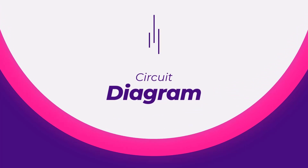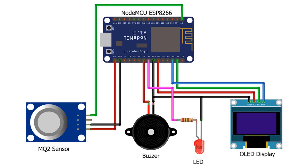This is the circuit diagram of this project. I have interfaced the MQ2 sensor analog pin A0 with the A0 pin of ESP8266. VCC and GND are connected to the 3.3V and GND pins of ESP8266 respectively. I connected the I2C OLED VCC pin to 3.3V and its GND pin to GND, and its SCL and SDA pins to D1 and D2 pins of NodeMCU. Then I connected an LED anode pin to D5 and its cathode to GND. Lastly, I connected the buzzer positive pin to D6 of NodeMCU and its negative pin to GND.